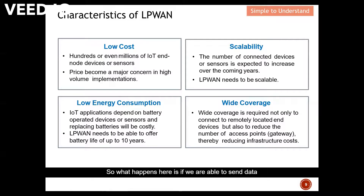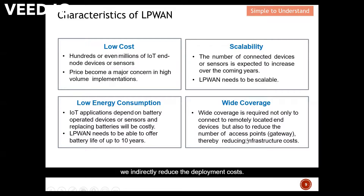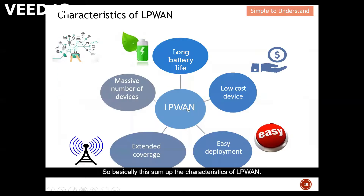Wide coverage means we are able to send data kilometers away. If we are able to send data kilometers away, we can actually reduce the number of gateways. And when we reduce the number of gateways, we can indirectly reduce the deployment cost.